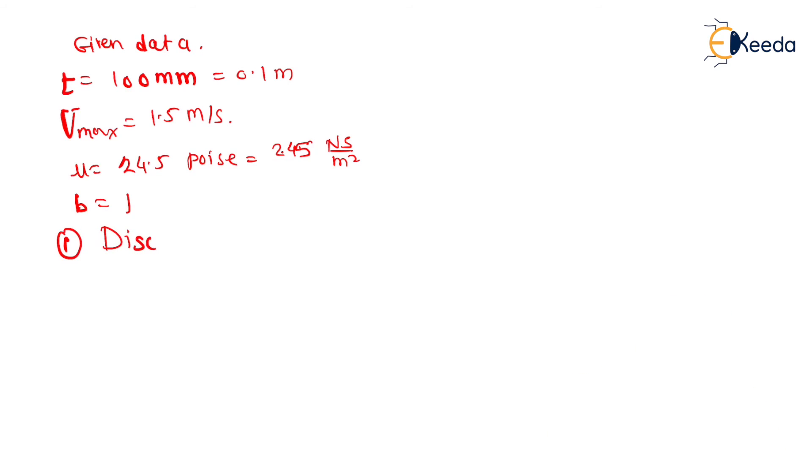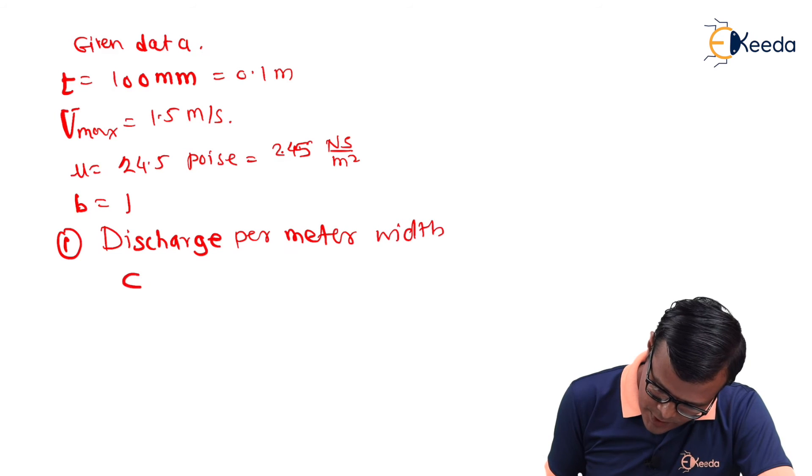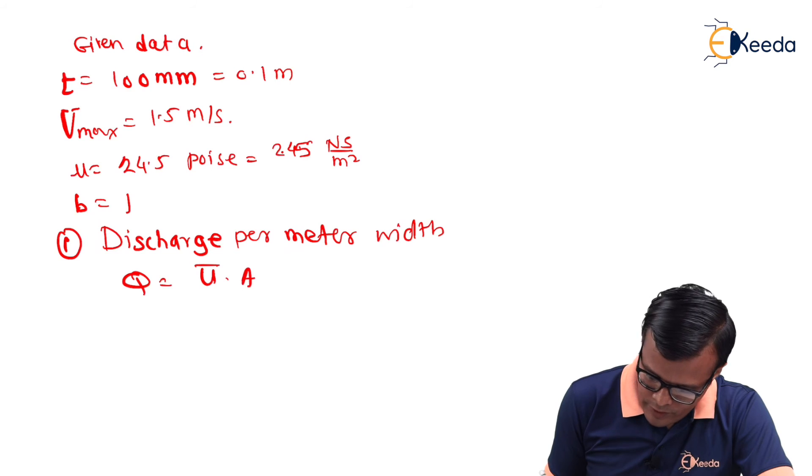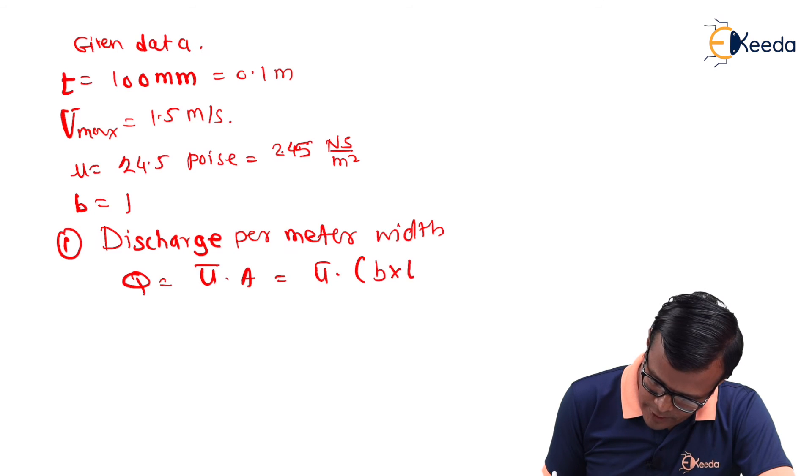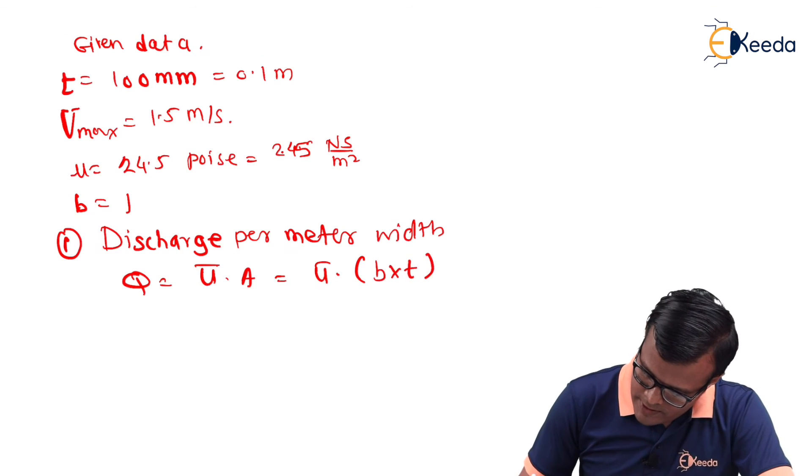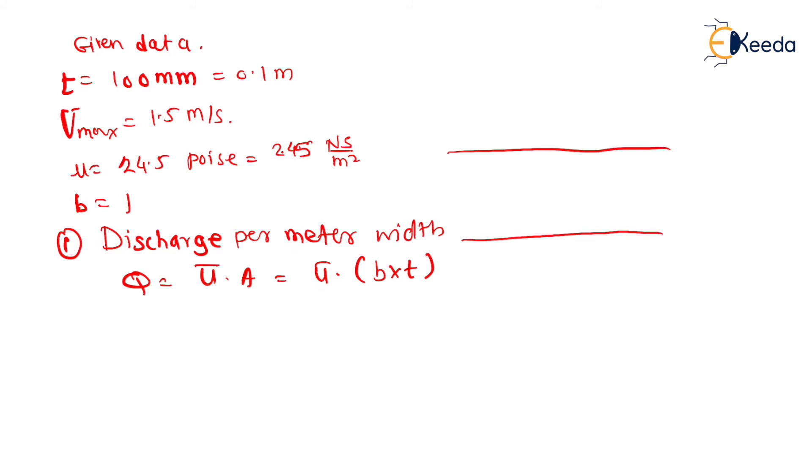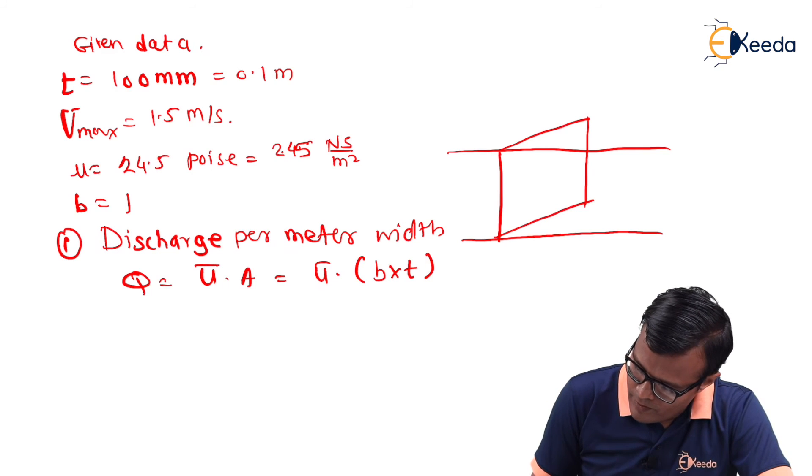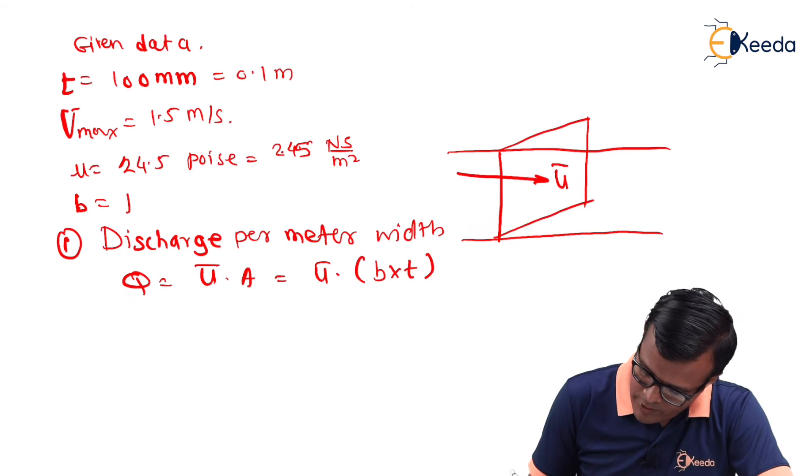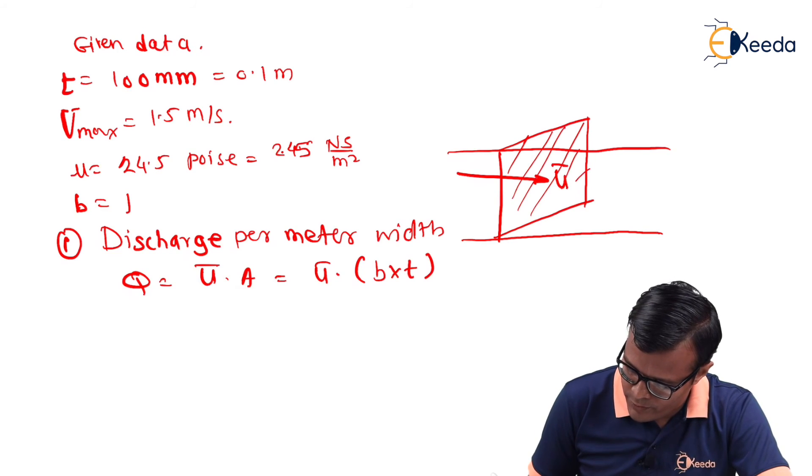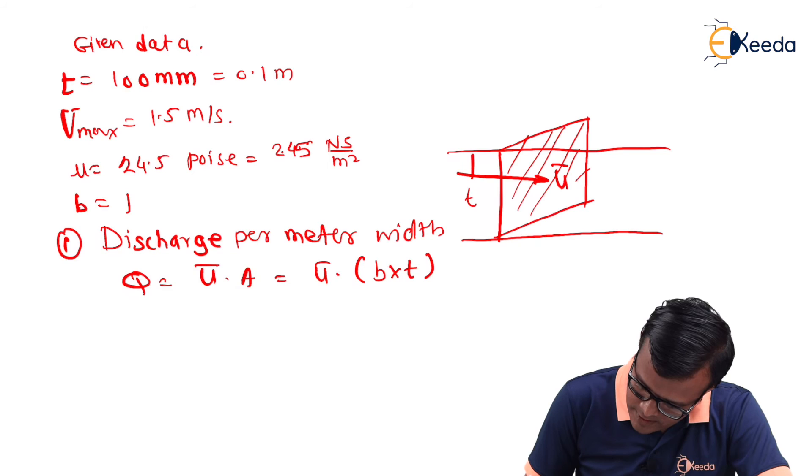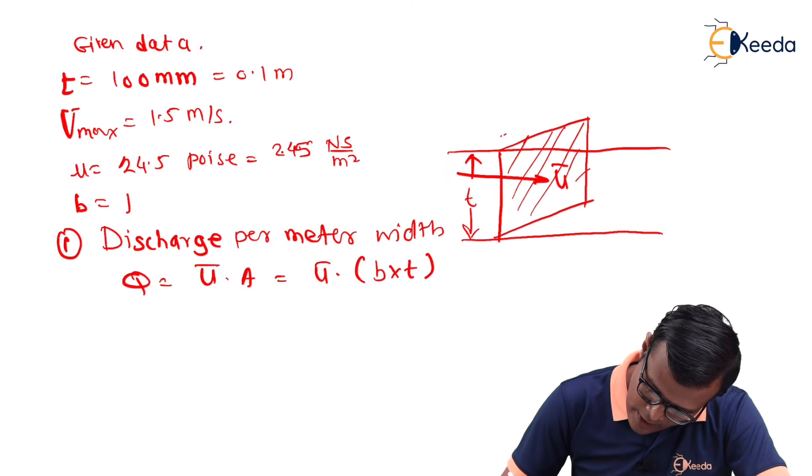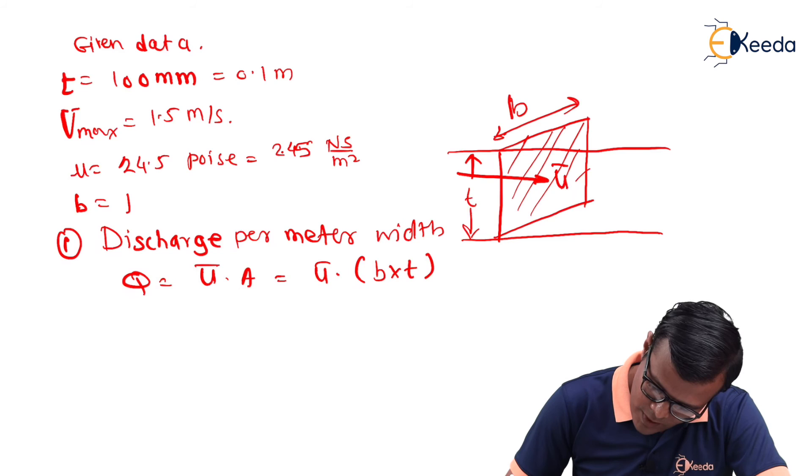So, we will start with discharge per meter width. This Q is basic formula ū into A. Area is nothing but the ū into this width b into thickness t. See, these are the two plates. And this is the cross sectional area. And this is the velocity ū. So, this cross sectional area is product of two terms. One is this distance that is t. t value is this gap. And this value is width is b which is equal to 1 in our case.